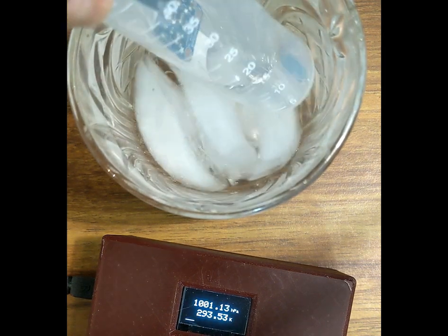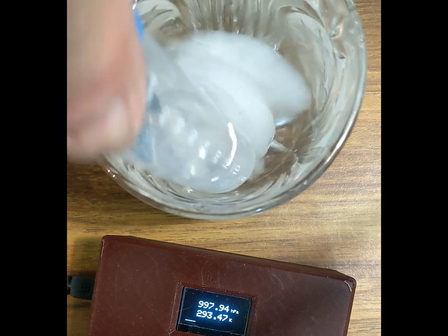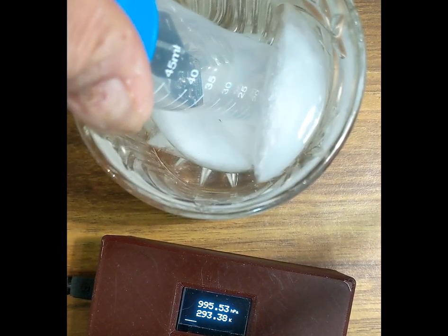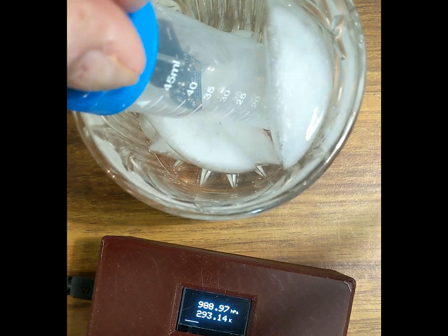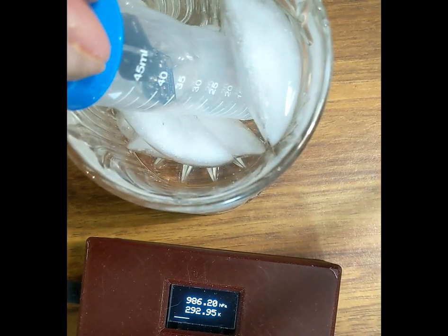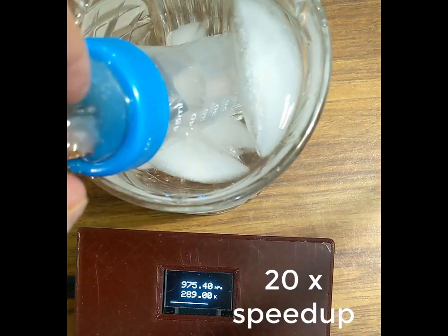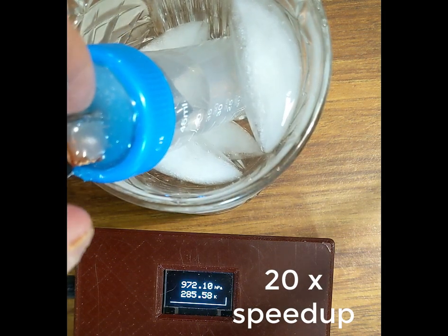As the temperature decreases inside that sealed tube, the volume stays constant so the pressure has to drop. You can see the temperature decreasing and as a consequence the pressure decreases as well.